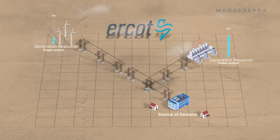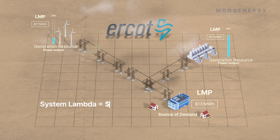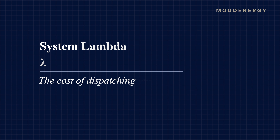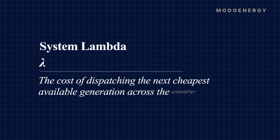If there's no congestion on the system, all Locational Marginal Prices, or LMPs, will simply be the same as the System Lambda — i.e., the cost of dispatching the next cheapest available generation across the system.